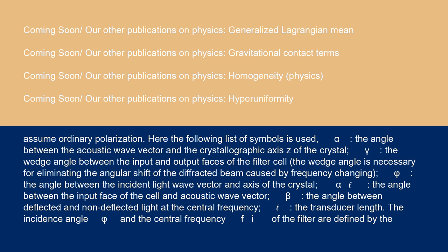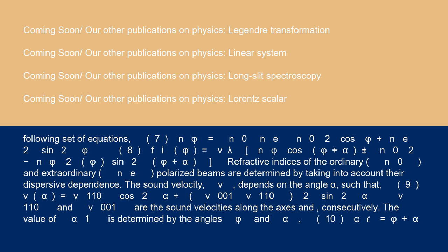The incidence angle φ and the central frequency fi of the filter are defined by the following set of equations. Equation 7: n(φ) = n0·ne/√(n0² cos²φ + ne² sin²φ). Equation 8: fi(φ) = (v/λ)[n(φ)cos(φ+α) ± √(n0² - n(φ)² sin²(φ+α))]. Refractive indices of the ordinary n0 and extraordinary ne polarized beams are determined by taking into account their dispersive dependence.